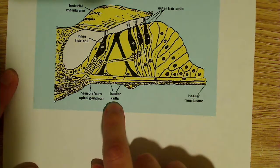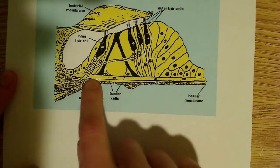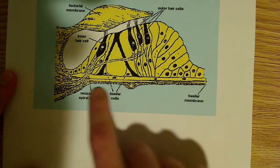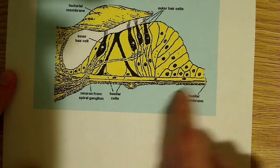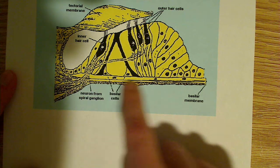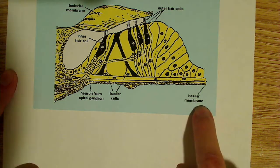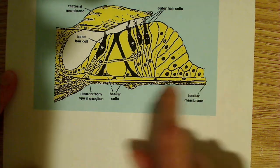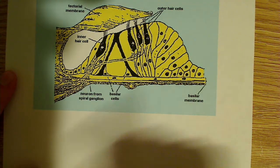So here's the basilar membrane — it's this piece right here. This is your basilar membrane. There's a little thing pointing to it, but this is kind of your basilar membrane right here.